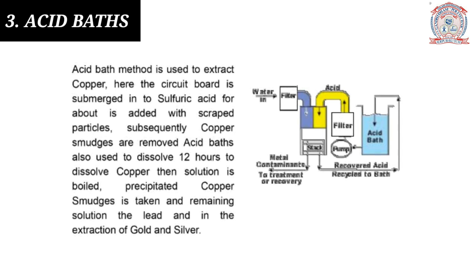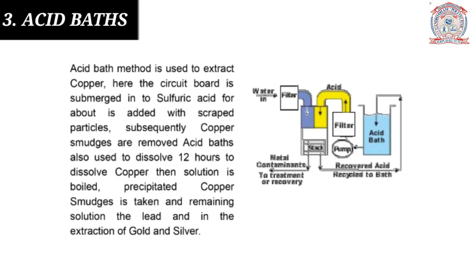The third method is acid baths. This method is used to extract copper. The circuit board is submerged into sulfuric acid for about 12 hours to dissolve the copper, then the solution is boiled. The precipitated copper sulfate is taken out, and the remaining solute is added with scraped particles, after which copper residues are removed. Acid baths are also used to dissolve lead and in the extraction of gold and silver.